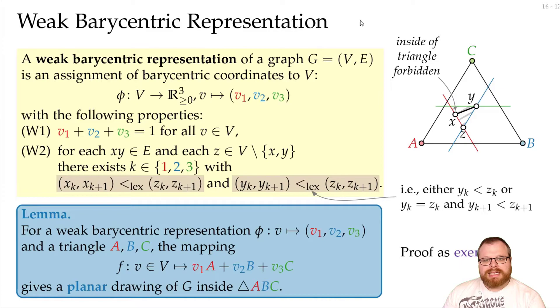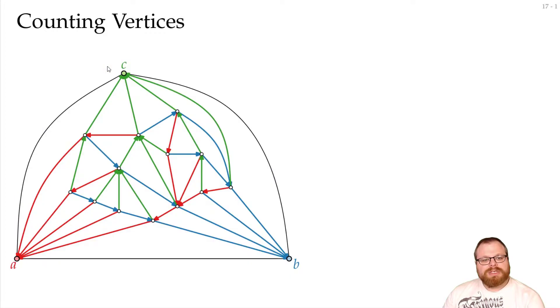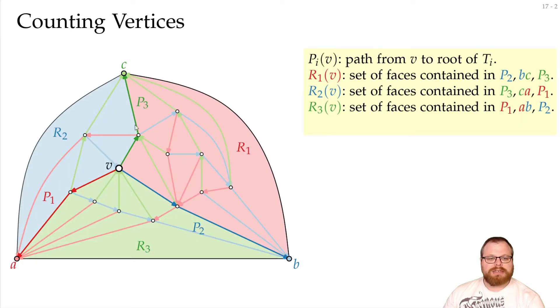We now want to use a slightly different strategy to get weak barycentric representation. But still, we use the same concept. We do a Schnyder labeling and a Schnyder realizer, and for every vertex we get our three paths and our three regions.